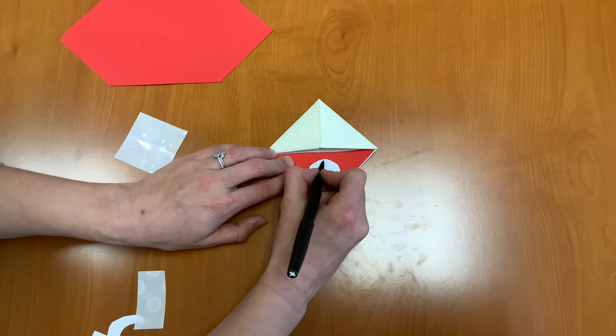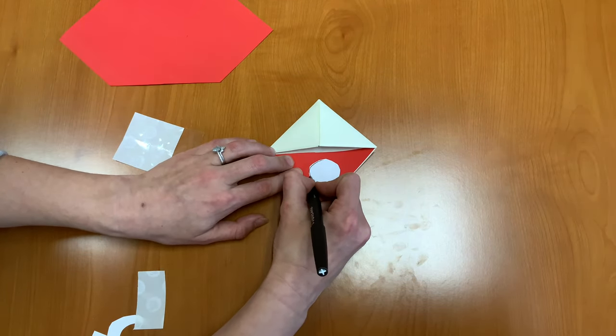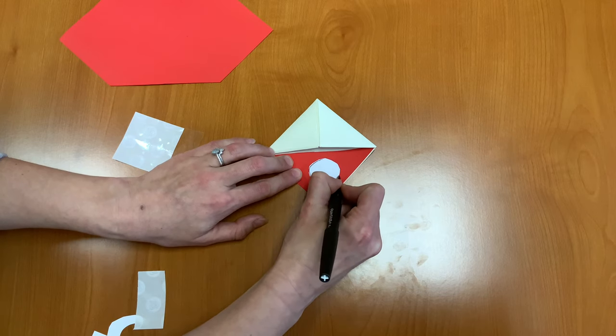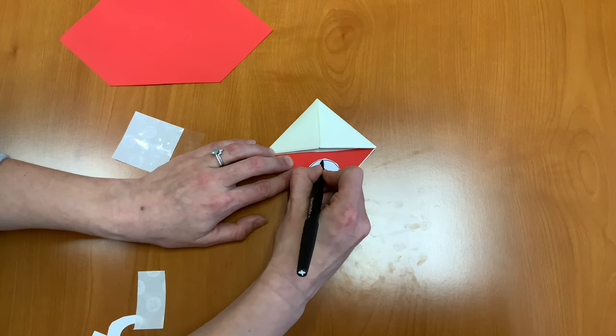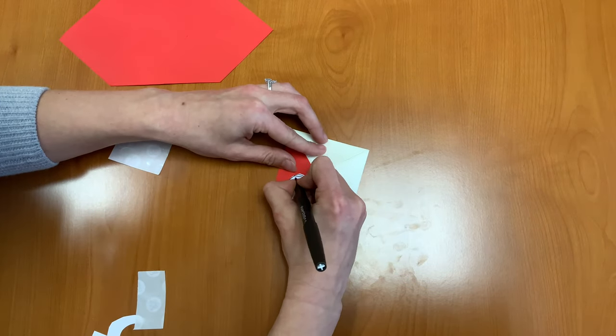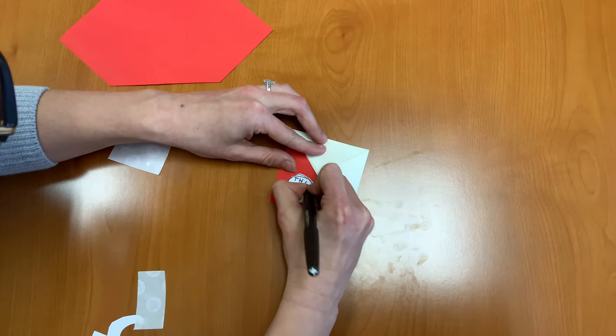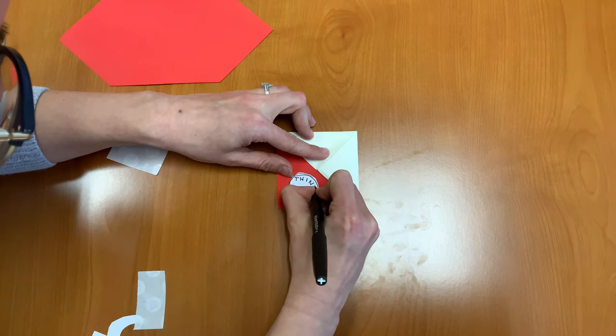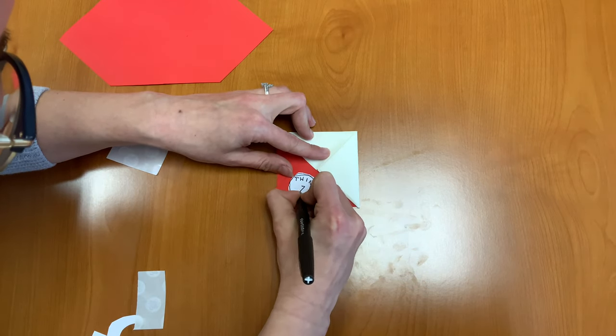And then we're going to draw a circle around it just really lightly, kind of in that Dr. Seuss style. And I'm going to write 'one'.